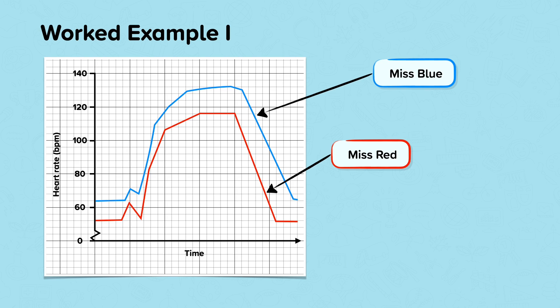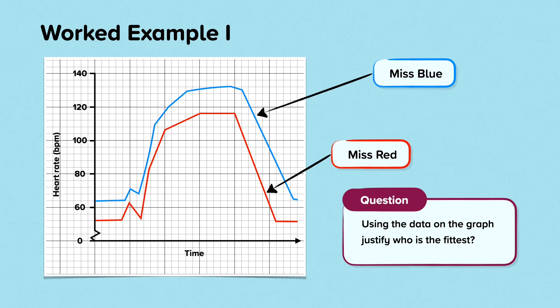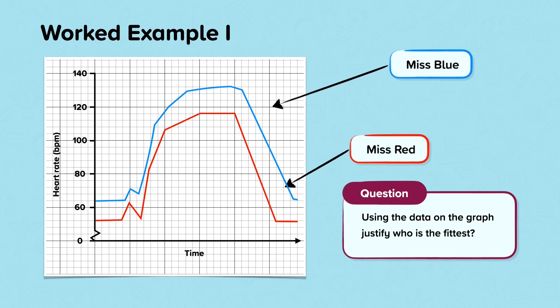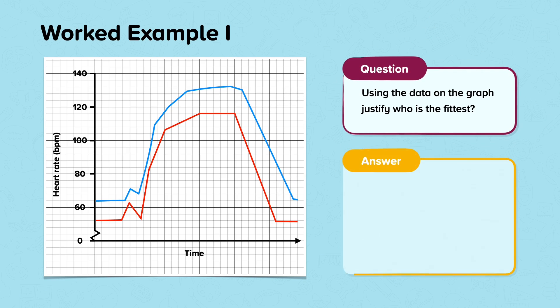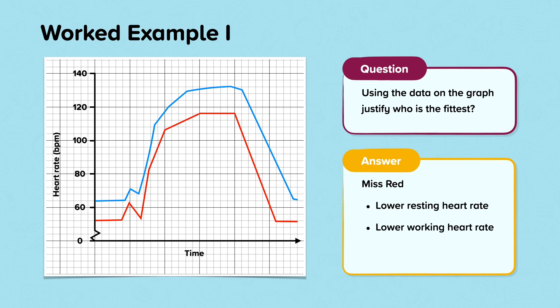Consider this question: using the data on the graph, justify who is the fittest. We can see from the graph that Miss Red has a lower resting heart rate. Therefore, this suggests she has a stronger heart. This means her heart is able to pump the required amount of blood around the body with less beats compared to Miss Blue. Miss Red's recovery rate is quicker back to her resting heart rate, therefore suggesting she can recover from intense exercise quicker.